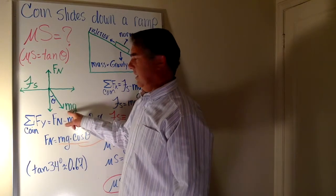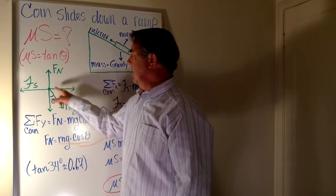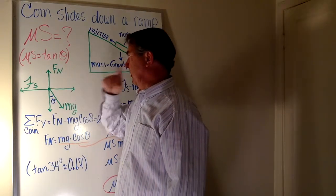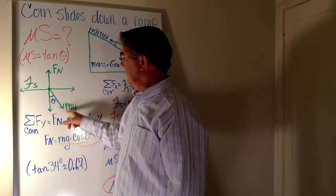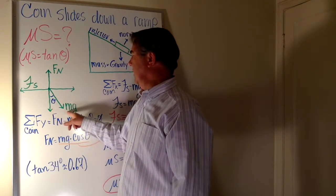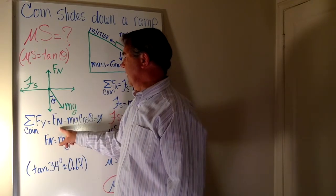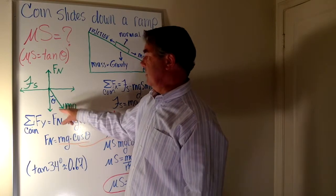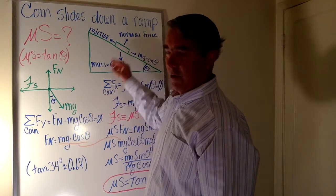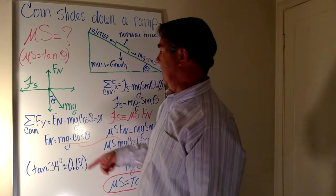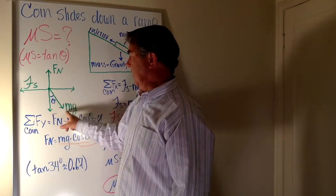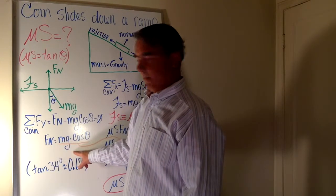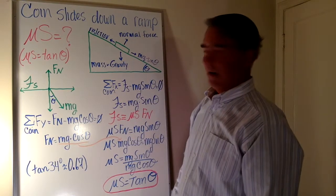mg — mass times gravity — is the third force and the only one that does not fall along a major coordinate axis. Along the y-axis, the normal force is opposed by the negative y component of mg. The sum of forces in the y direction equals zero since the coin isn't moving, so the normal force minus mg cosine theta equals zero, meaning the normal force equals mg cosine theta.